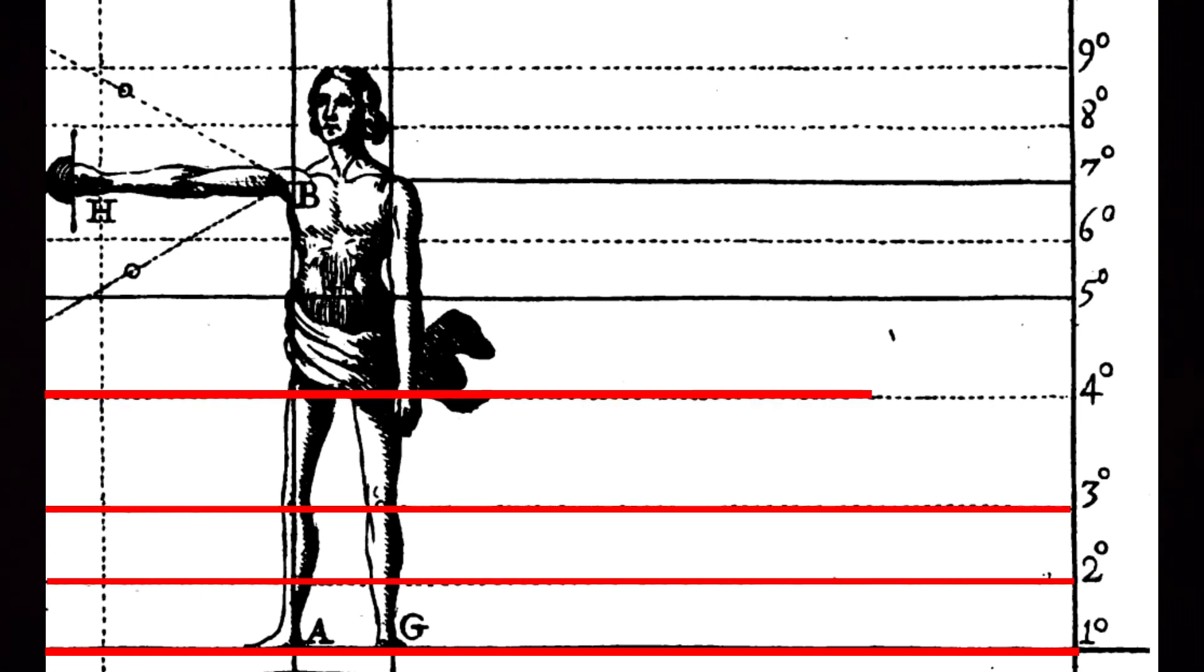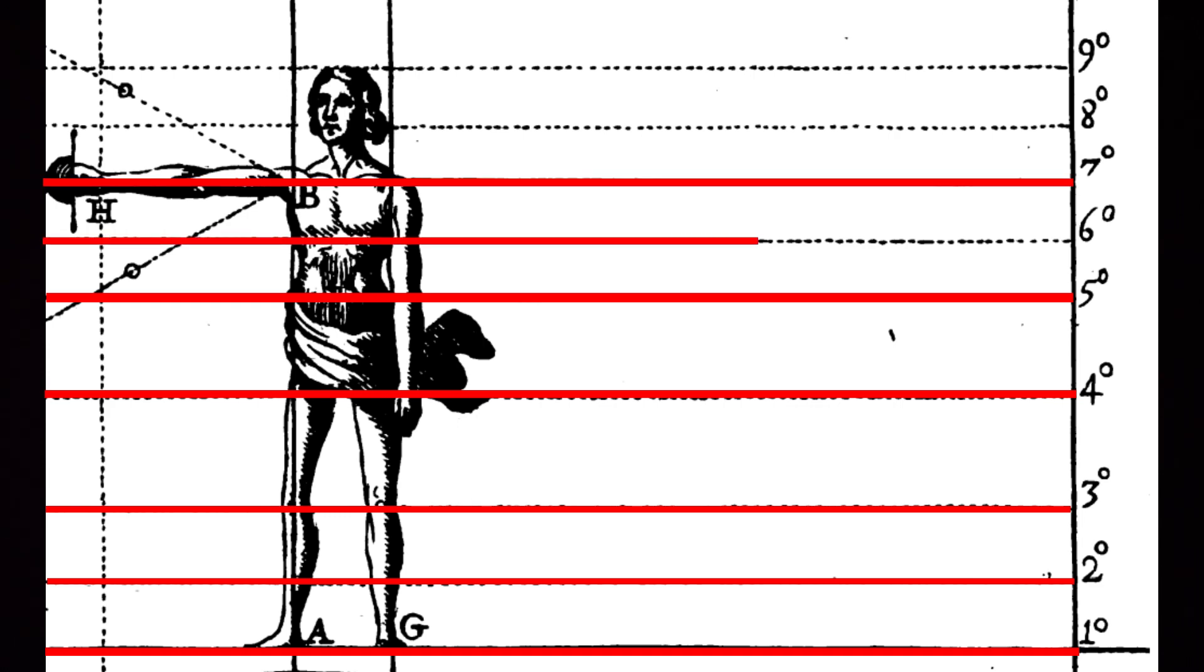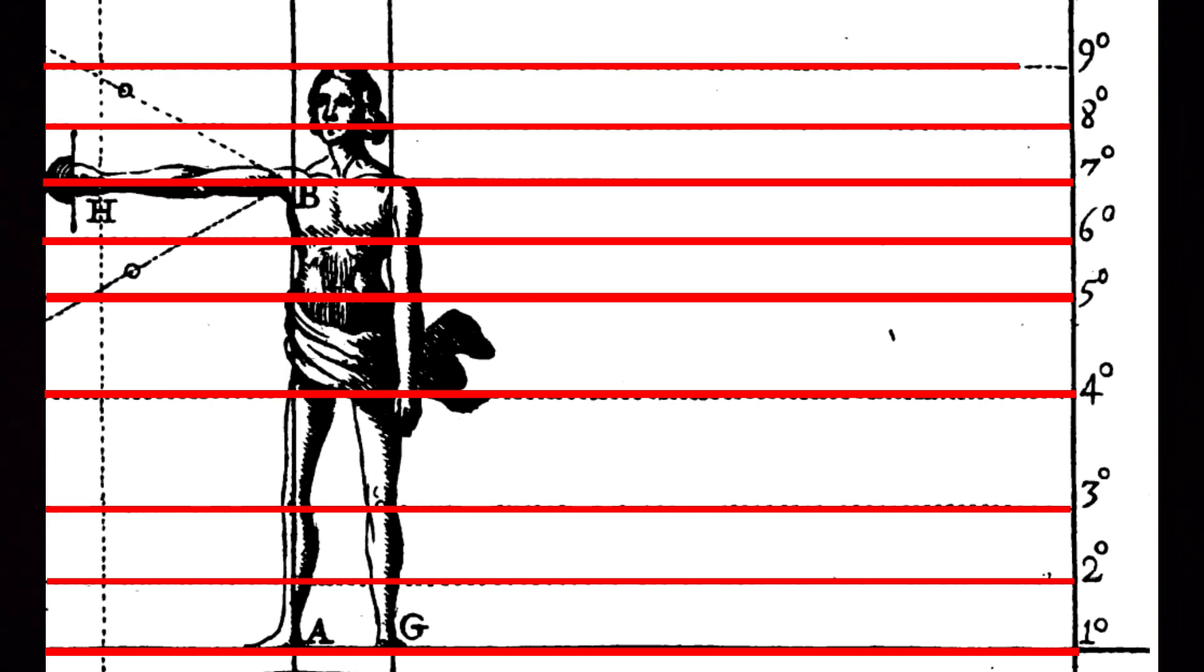Four is through the hips, five at the height of the bellybutton, seven is the shoulder, and six is in between the bellybutton and the shoulders. Eight is through the mouth, and nine is the top of the head.